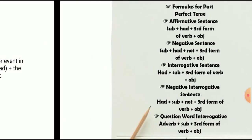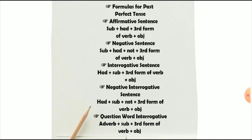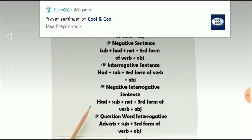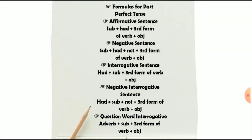To summarize the sentence types: affirmative — 'He had played football.' Negative — 'He had not played football.' Interrogative — 'Had he played football?' Negative interrogative — 'Had he not played football?' Question word interrogative — 'When had he played football?'